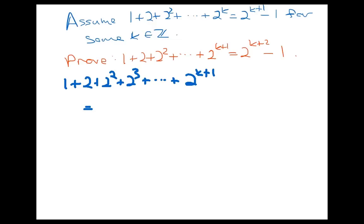So now let's move on to the proof of the inductive step. We're going to assume that for some positive integer k, the sum 1 plus 2 to the first plus 2 to the second plus 2 to the third, all the way up to 2 to the k, is equal to 2 to the k plus 1 minus 1. And we're going to prove that given this assumption, the sum 1 plus 2 to the first plus 2 to the second, all the way up to 2 to the k plus 1, is equal to 2 to the k plus 2 minus 1. We're trying to prove an equation holds, so it's best to look at each side individually.